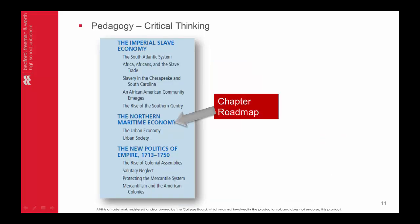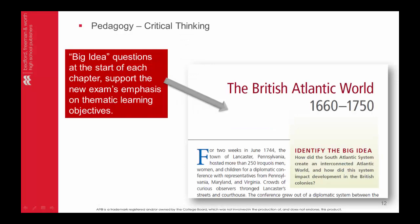America's History provides extensive pedagogical support for students before, during, and after each chapter. It offers a chapter preview to help students see the roadmap for the chapter at a glance, enabling them to comprehend the text more fully. There are also analytical questions that follow each major section of the narrative, encouraging students to review what they have read. Finally, there is a chapter summary and big picture chapter review questions at the conclusion of every chapter, asking students to think critically rather than just recall facts.